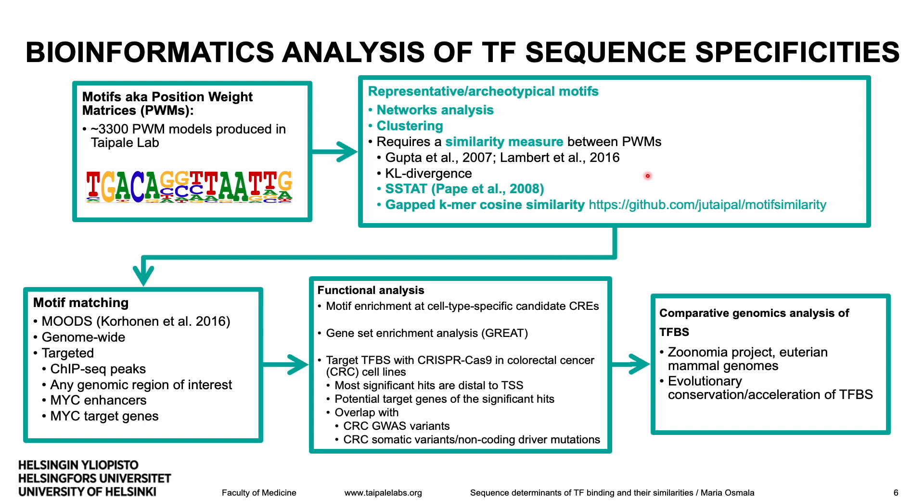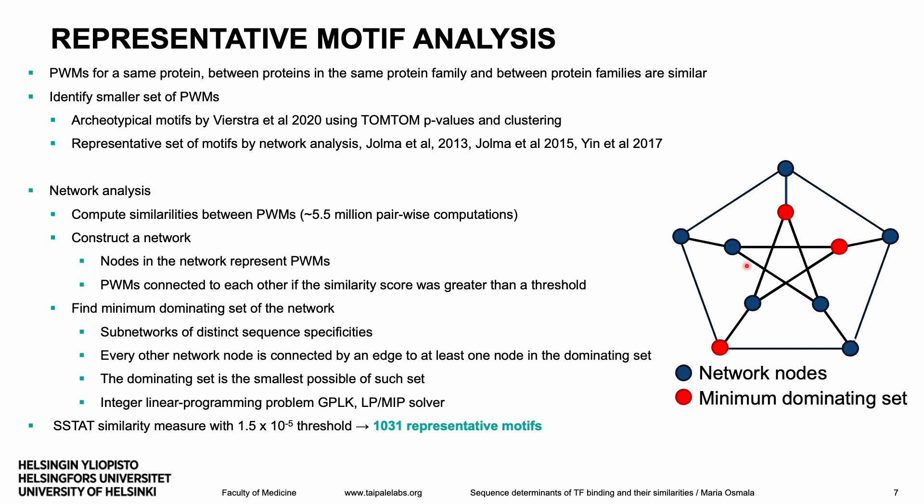To identify a smaller set of distinct motifs, commonly referred to as representative or archetypical motifs, a network and clustering analysis are performed. In the network analysis, similarities between around 5.5 million motif pairs are calculated. A network of motifs is built where nodes represent motifs, and motifs are linked if their similarity is above a certain threshold. A minimum dominating set is found so that each node not in the set is connected to at least one node in the set. This problem is solved as an integer linear programming problem with standard solvers. With a certain EstStat similarity threshold, we obtain around 1,000 representative motifs.